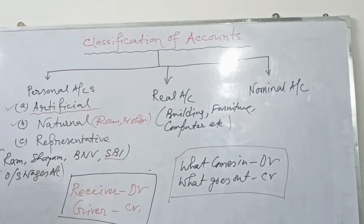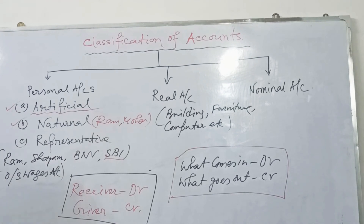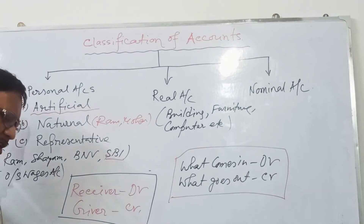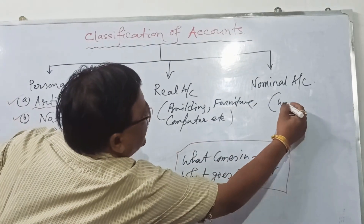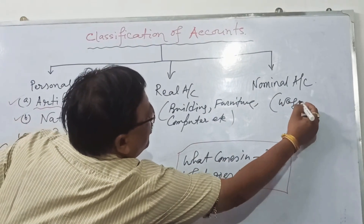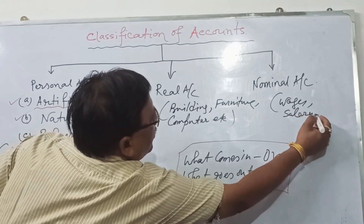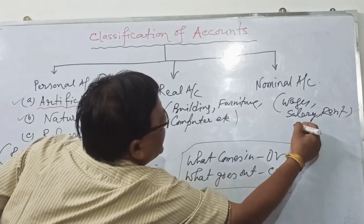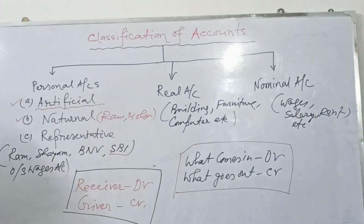Except personal accounts and real accounts, all other accounts are nominal accounts. Nominal accounts record expenses — wages account, salary account, and rent account are examples of nominal accounts.